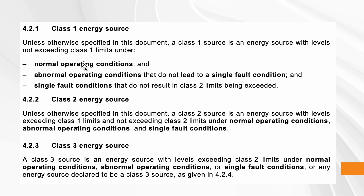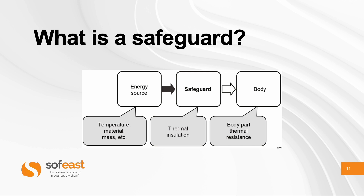You need to think about class levels in terms of the different operating conditions — this is where the concepts start to come together. For example, if there's a Class 1 energy source that under a single fault condition results in going to Class 3, it is actually considered Class 2. Of course, you need to read the standard to fully understand it — I'm just trying to summarize based on my experience.